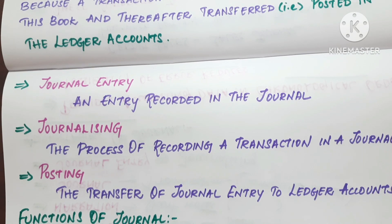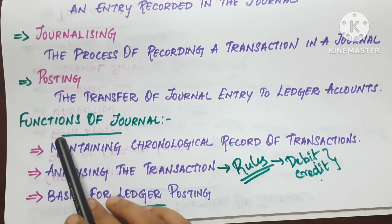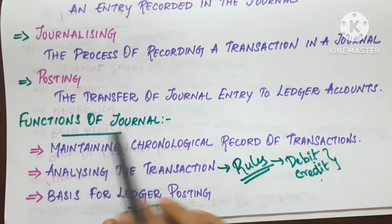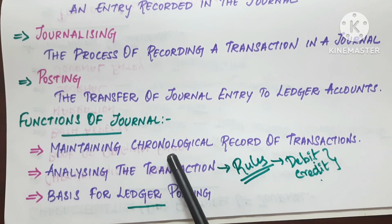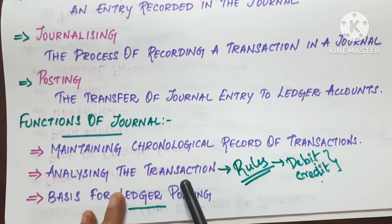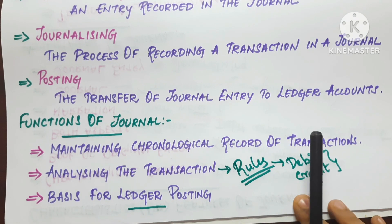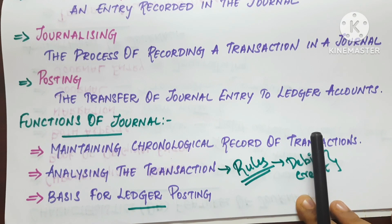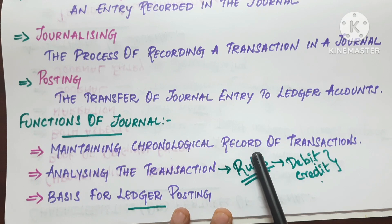Next topic is the functions of journal. The first function is maintaining the chronological order of transactions. The next function is analyzing the transaction using the rules of debit and credit.